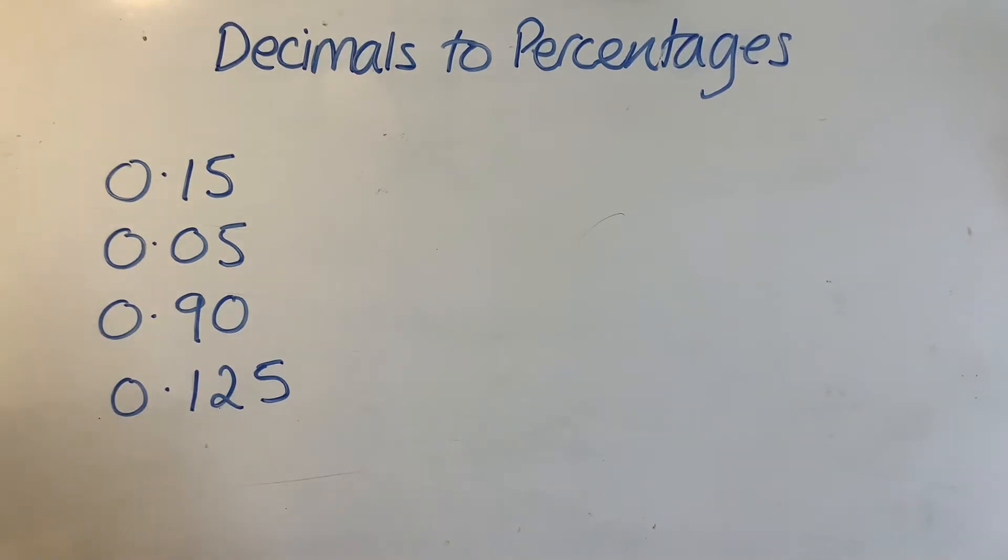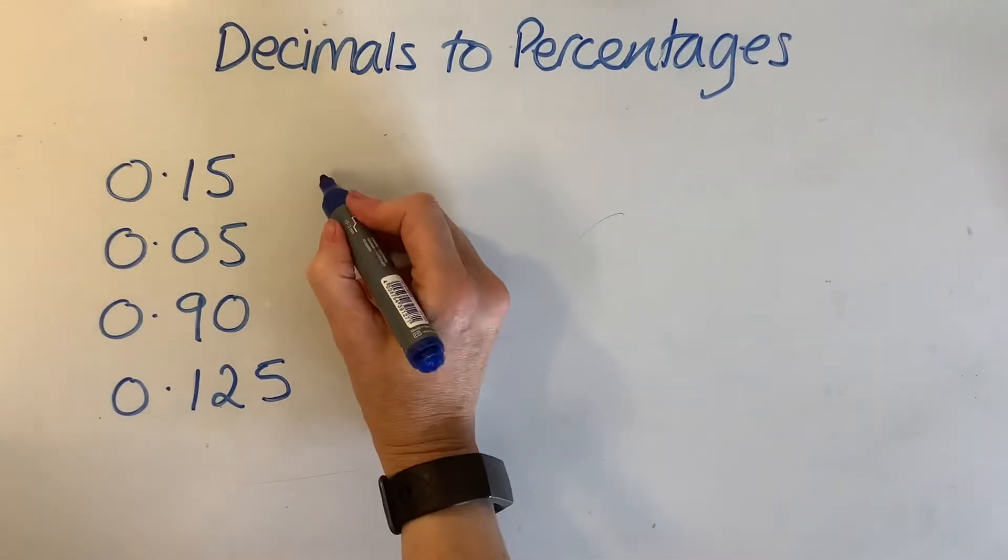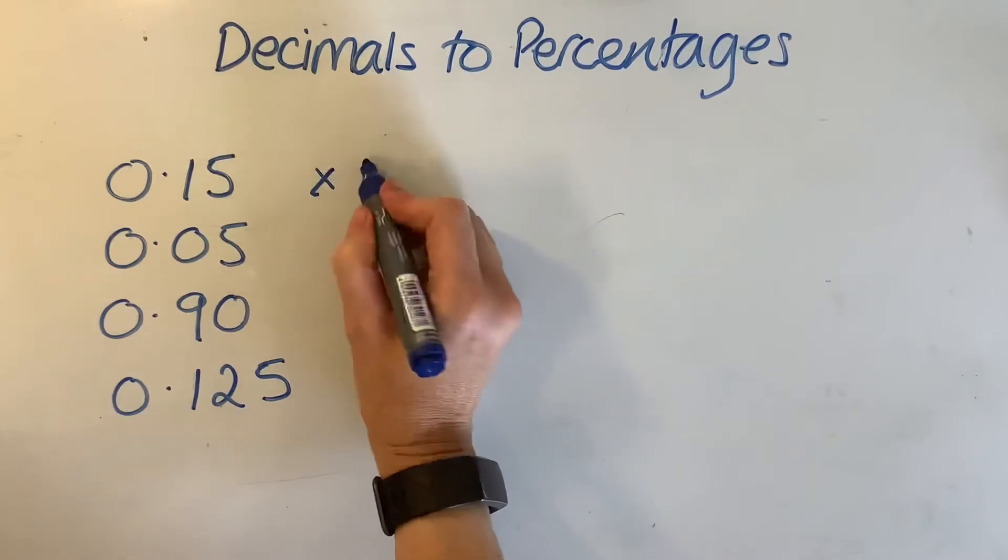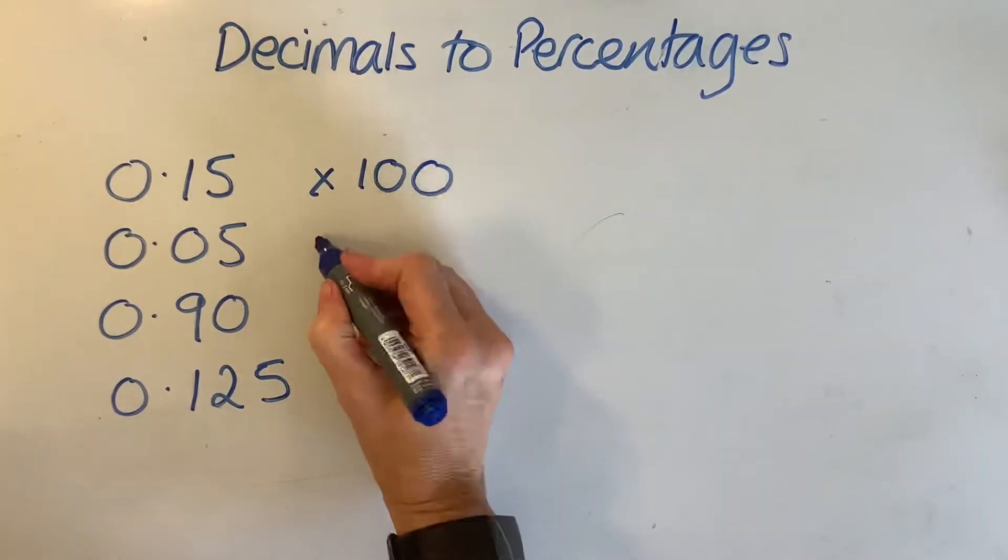So if you want to convert a decimal to a percentage, it's dead simple, and you can do this without a calculator. You simply times by 100.